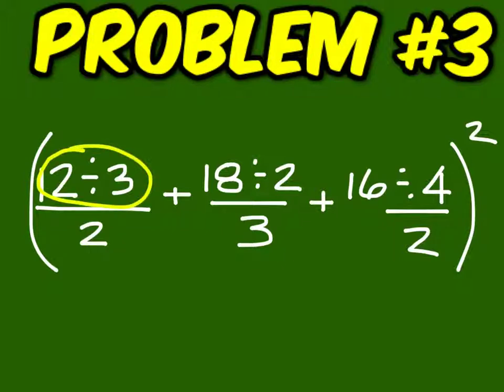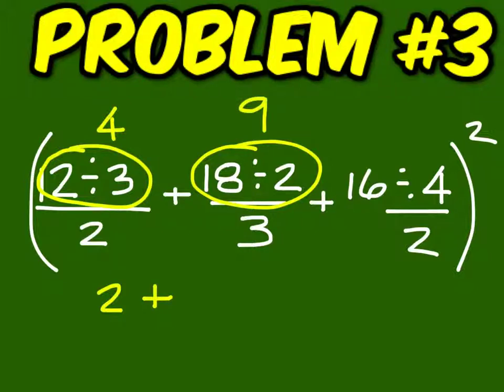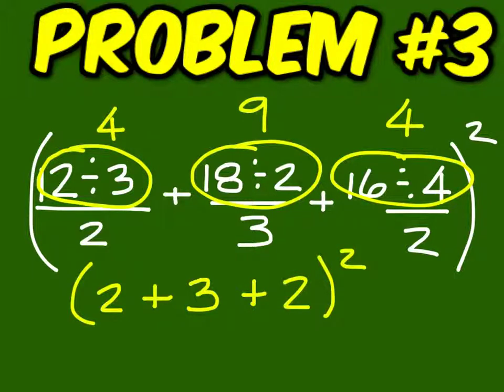12 divided by 3 is 4, divided by 2 is 2. That's 9 divided by 3 is 3, and 16 divided by 4 is 4, divided by 2 is 2. So you end up with 5 plus 2 is 7, squared is 49.